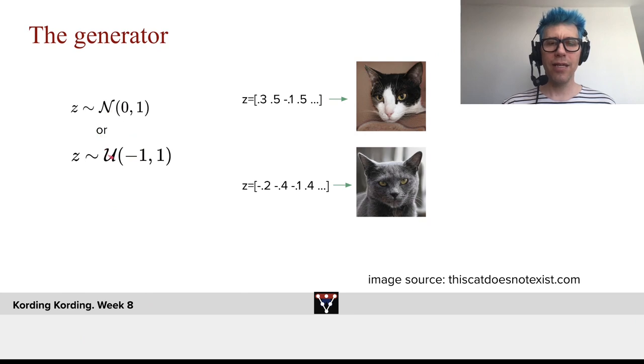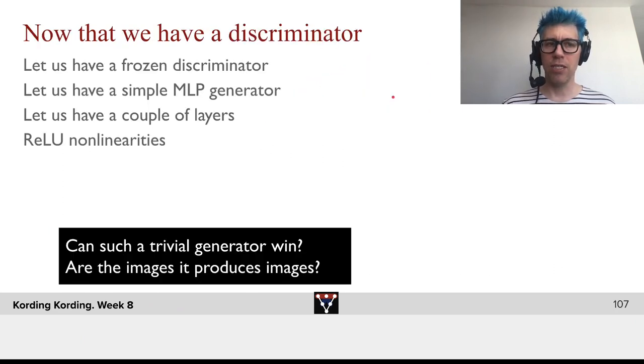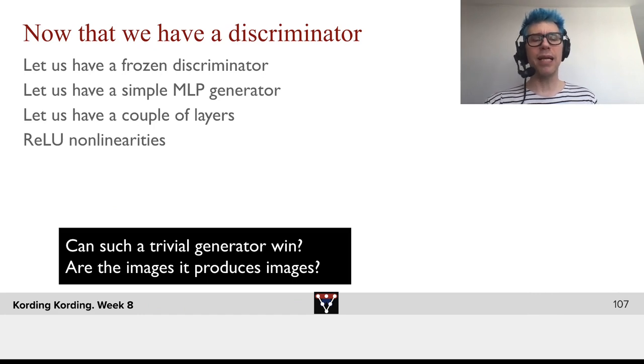Now that's the generator mechanism. This is where the neural network sits. It gets as input this vector, it produces as output an image like that. And now that we have a discriminator, let us freeze the discriminator. Let us use a simple multilayer perceptron generator. Let's give it a couple of layers with ReLU nonlinearities and ask, can such a trivial generator win, which is ultimately make the discriminator no longer know the difference between real and fake images.